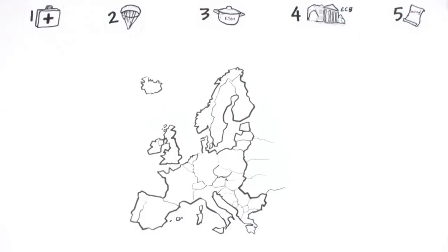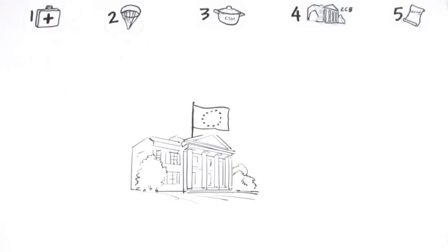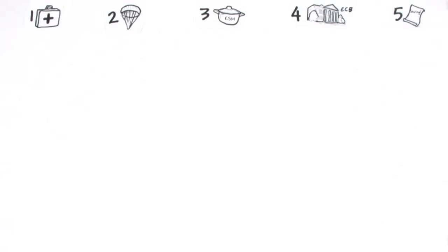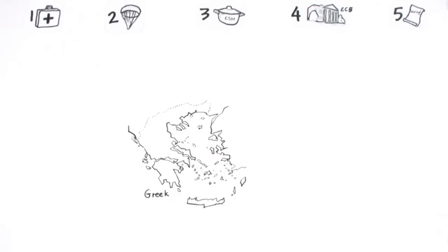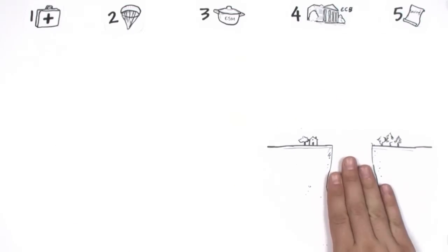In order to fill the huge crater, five measures have been taken. The first three were devised by the euro countries. The fourth is carried out by the European Central Bank. The fifth is under the supervision of the Greek government itself. So, here we go.